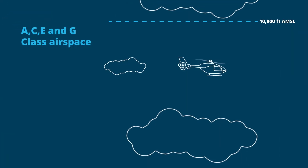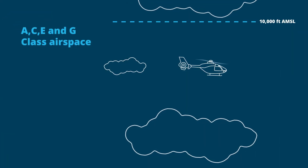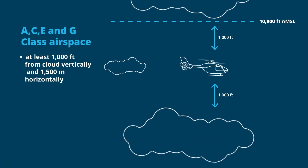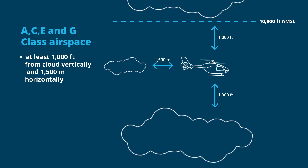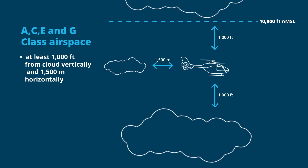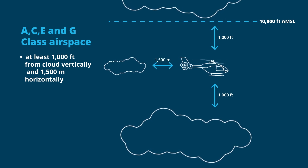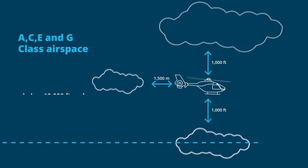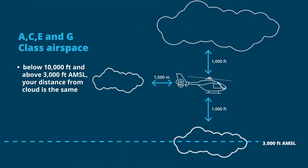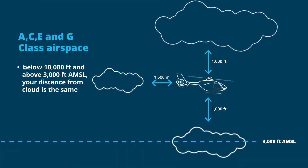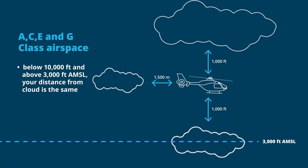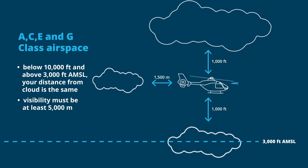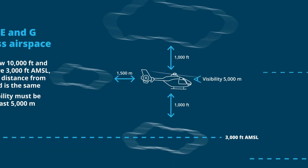Let's look at A, C, E, and G class airspace. You must be at least 1,000 feet from cloud vertically and 1,500 meters horizontally when you're below 10,000 feet and above 3,000 feet AMSL. Your visibility must be at least 5,000 meters.